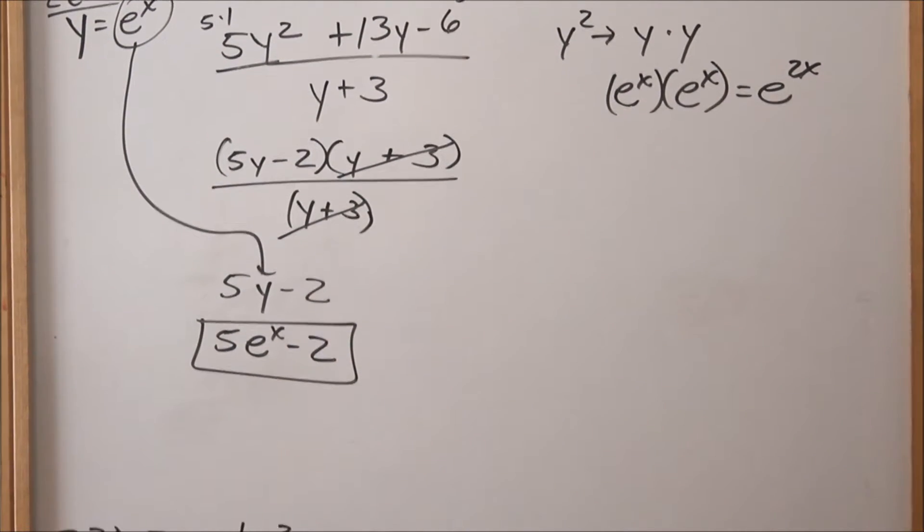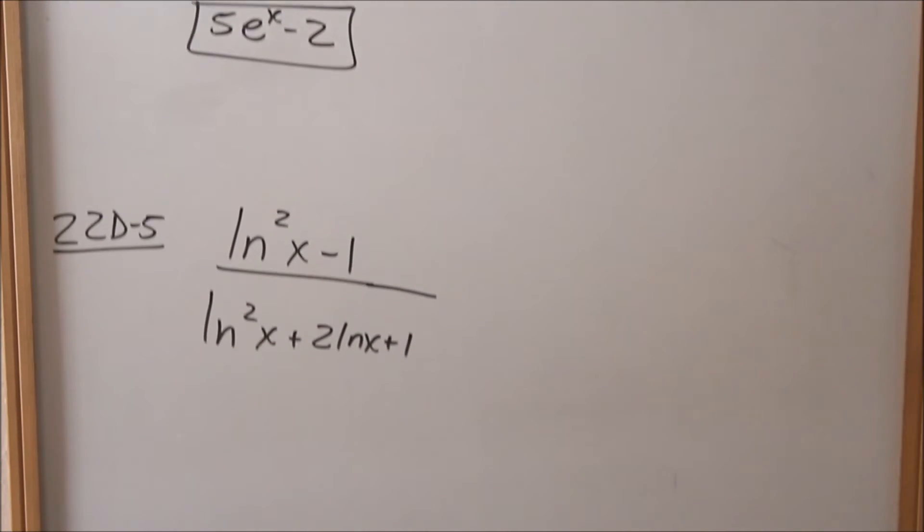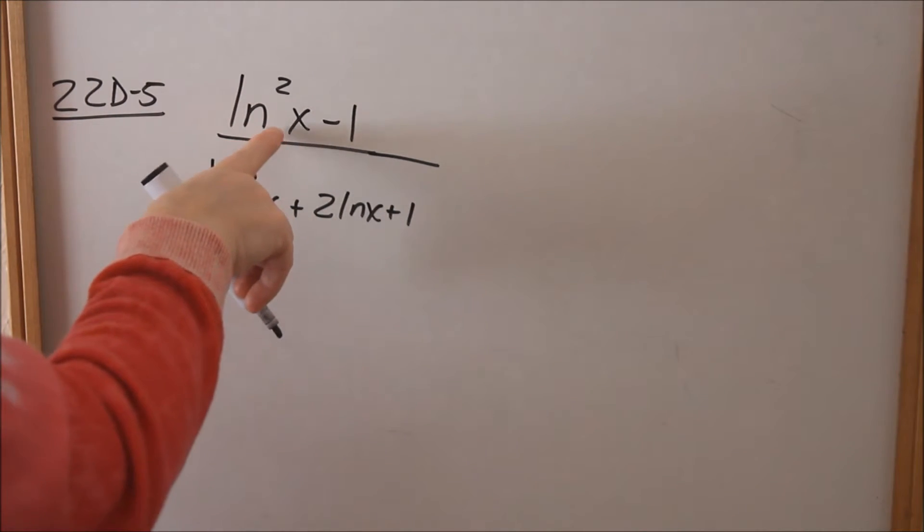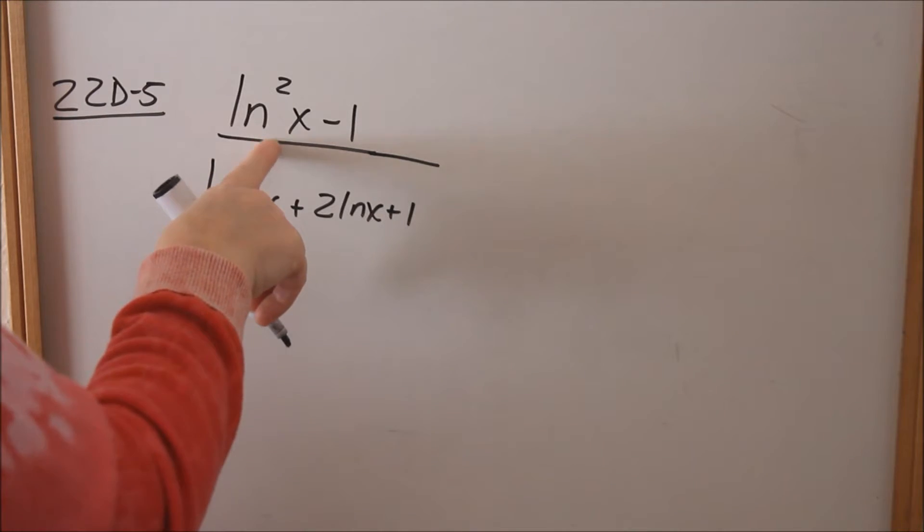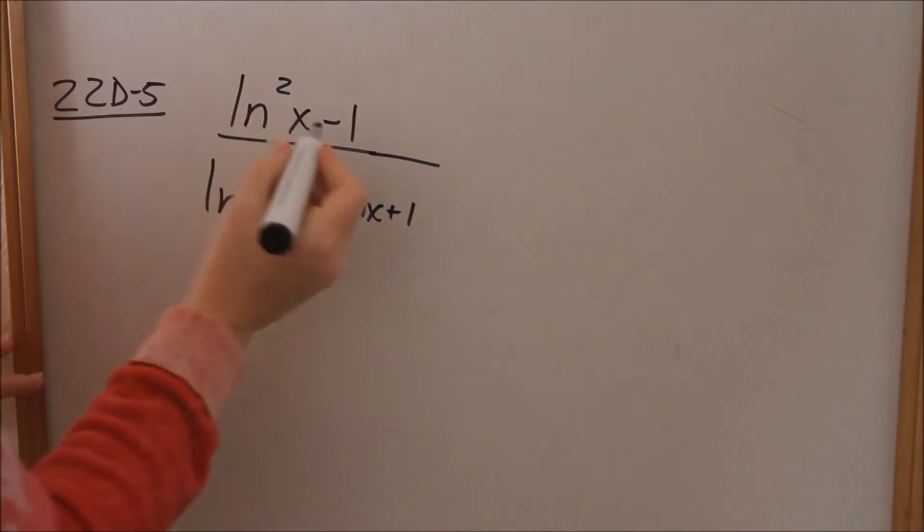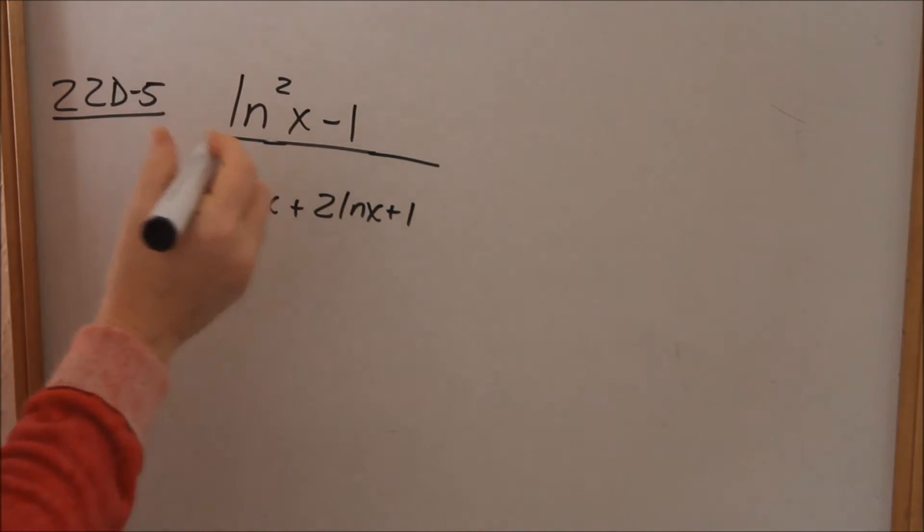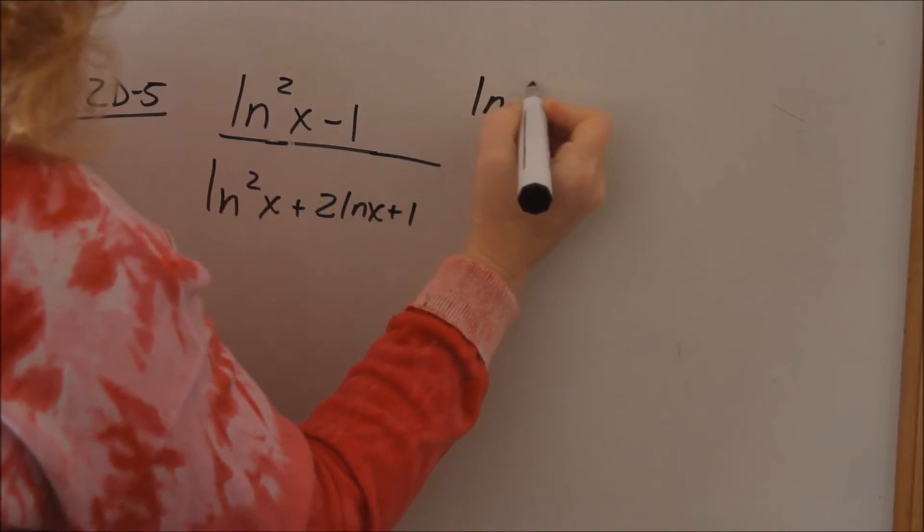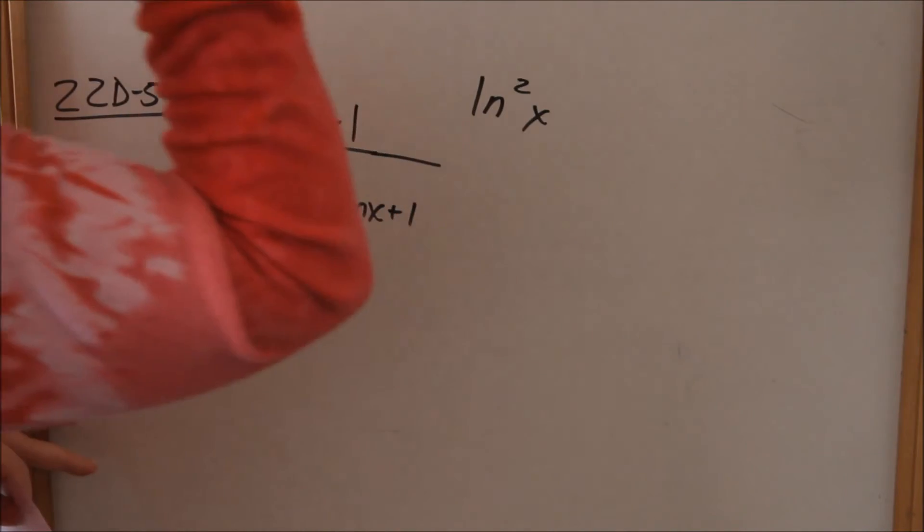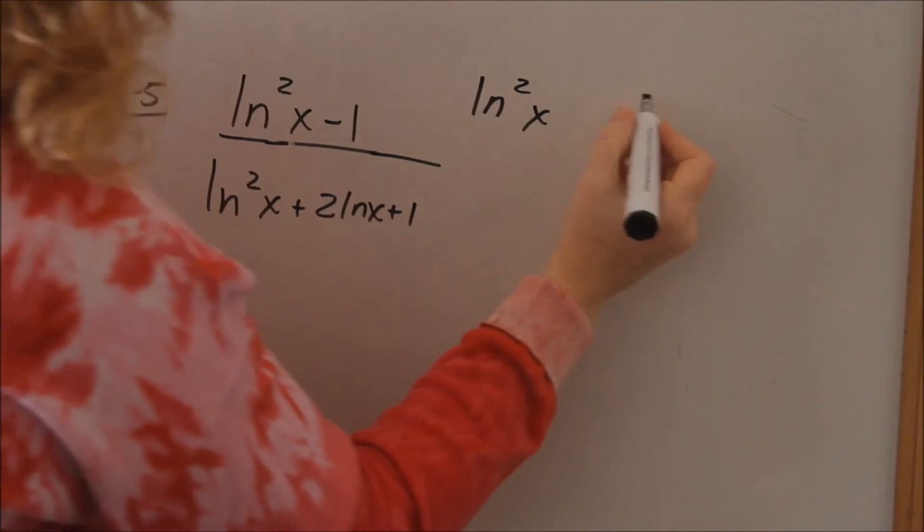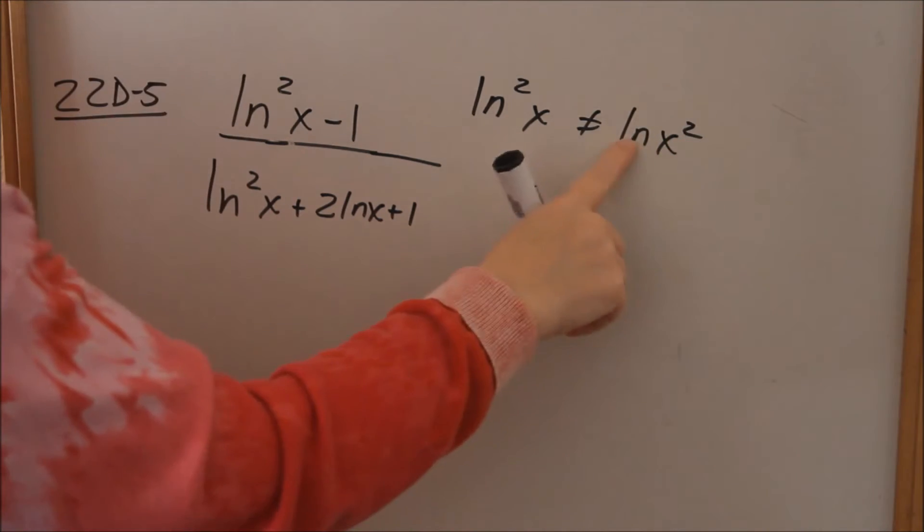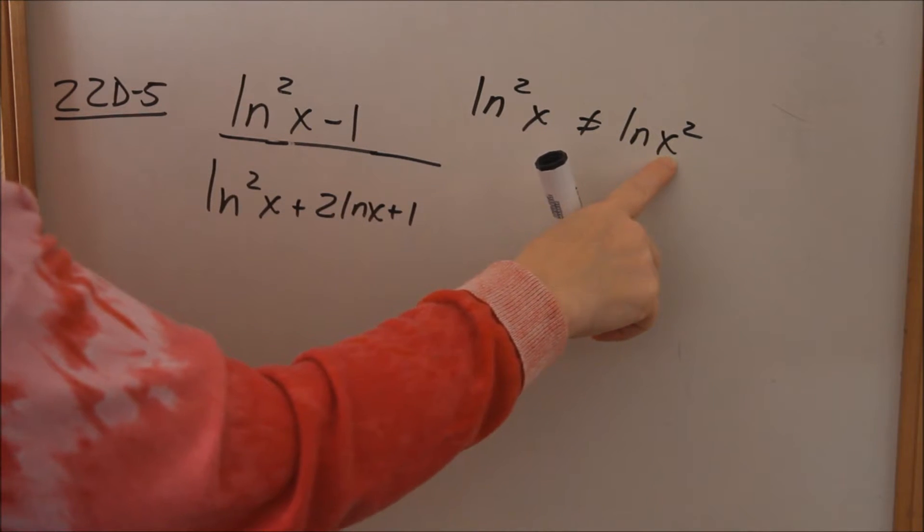Now look at 22d number 5. The one thing I want to point out about this is that this is natural log x squared. Let me show you the difference. Do you see how the exponent is in between the natural log and the x? (ln x)^2 is different than ln(x^2). This is natural log, and then you square the x.